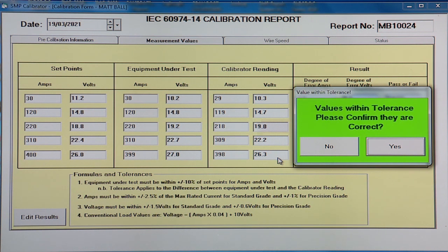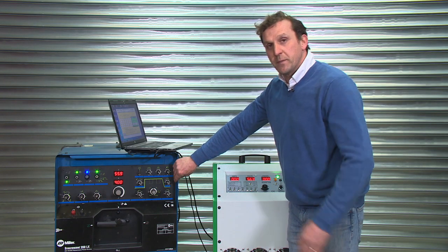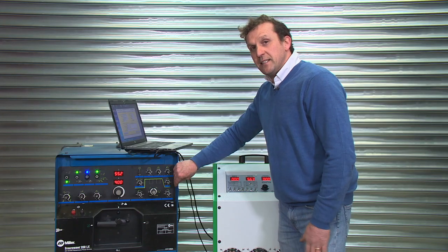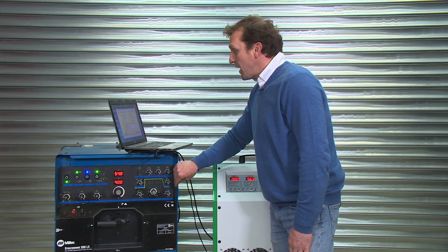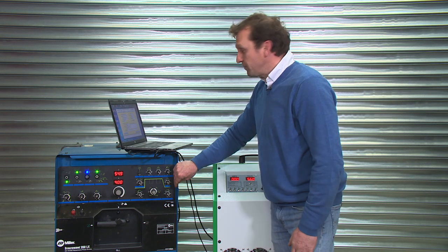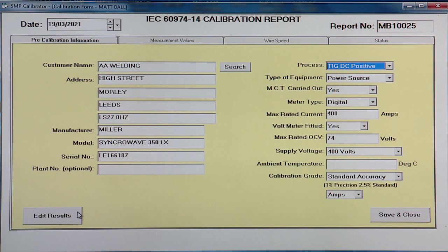Once all the results are entered, we're asked again to confirm everything's correct, yes. We're also asked, do we want to take wire speed? We've got a TIG welder, no wire speed involved, so that's a no. Because this is an AC-DC machine and the customer uses it for aluminium welding, we are going to have to calibrate in the opposite polarity. Quite simple though, on the program, just hit the button, calibrate in opposite polarity.